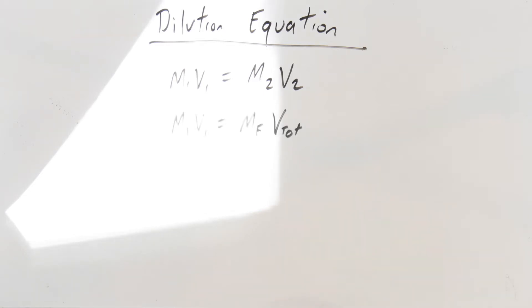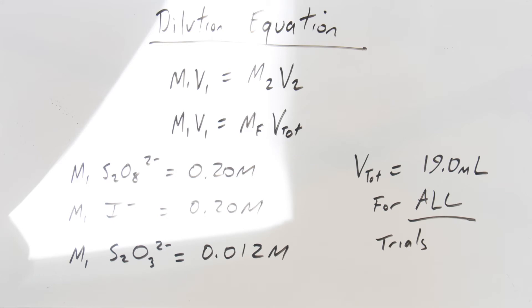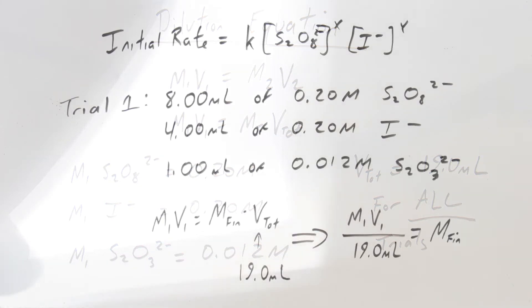We can rewrite that using the final molarity and the final volume. Since the final volume is identical for every trial, we just need the initial concentration. The standby concentrations are 0.20 molar for the persulfate anion, 0.20 molar for the iodide anion, and 0.012 molar for the thiosulfate anion. Every trial has a total volume of 19 milliliters, so all we need to work out from the data is the concentration of each reactant in each trial, since the reaction has been diluted out.